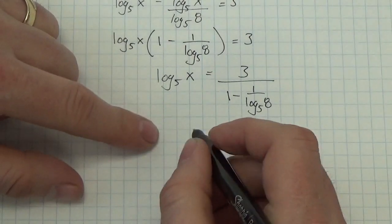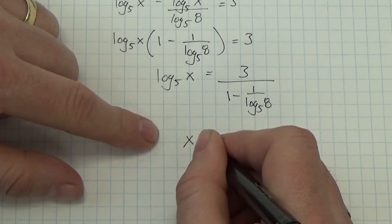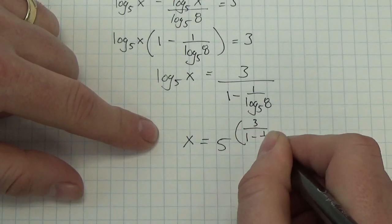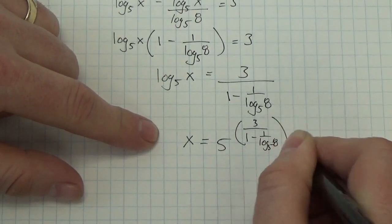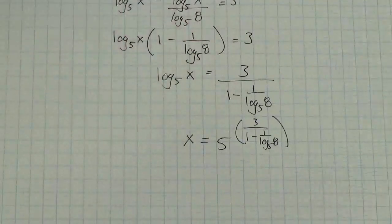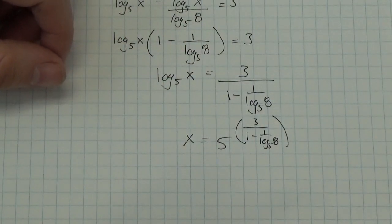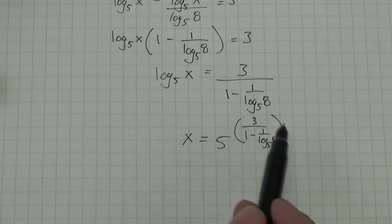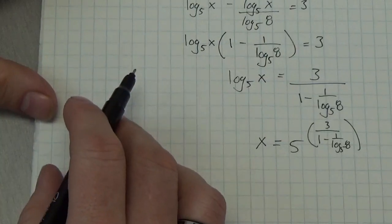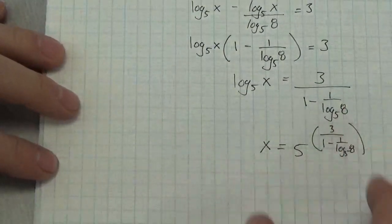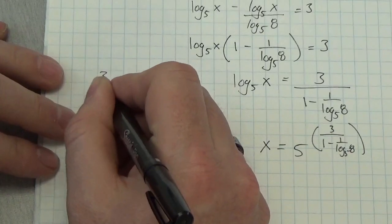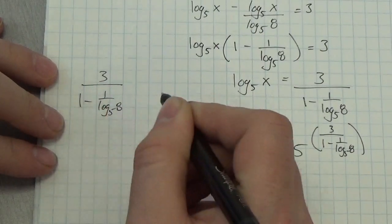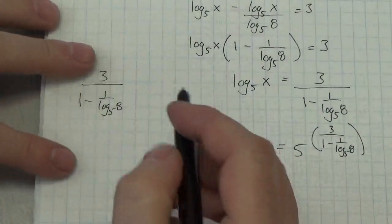So x is going to equal 5 to the power of 3 over (1 minus 1 over log base 5 of 8). I could plug that into my calculator now, but let's do a bit more work and simplify this. So I'll come over here and do some scratch work. I've got 3 over (1 minus 1 over log base 5 of 8), and I want to try to reduce this as much as I can.